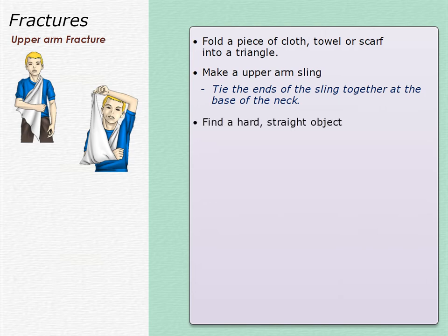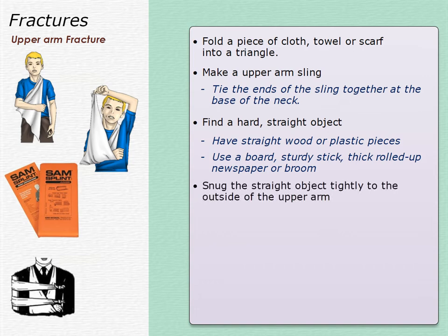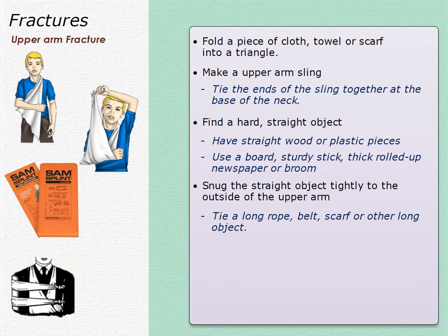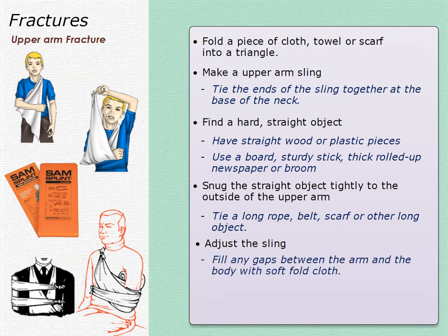Find a hard, straight object to use as an upper arm splint to keep the arm as straight as possible. First aid kits may have straight wood or plastic pieces you can use as splints. If not, use a board, sturdy stick, thick rolled-up newspaper, or broom. Snug the straight object tightly to the outside of the arm. Tie a long rope, belt, or scarf around the splinted arm and the entire body to hold the arm in place. Fill any gaps with soft folded cloth so the injured arm has nowhere to move. Seek emergency medical attention immediately.